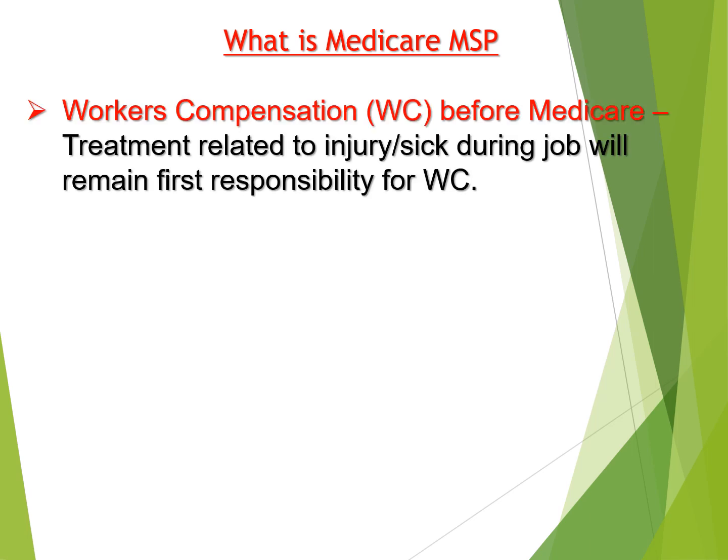In addition, there is a condition called Worker's Compensation. If a patient is injured in their working environment — in your office, factory, or any work-related conditions — worker's compensation insurance will be paid as primary and Medicare will be secondary. Medicare will not be filed first. If the condition is an injury reported as worker's compensation, the employer's worker's compensation insurance will cover it, and the injury-related treatment claim must be filed to worker's compensation first before Medicare.